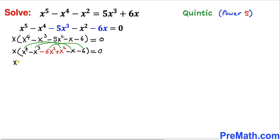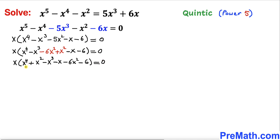So we write x times (x⁴ + x² - x³ - x - 6x² - 6) = 0. Now we can see a clear pattern: x² is common between the first two terms, -x is common in the next pair, and -6 is common in the last pair.